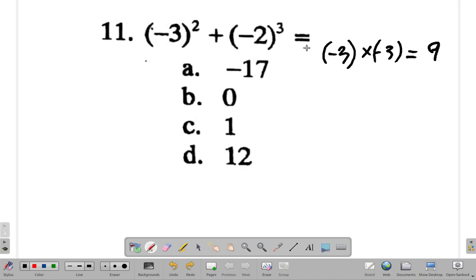It is positive 9 plus negative 2 cubed. It is negative 2 by negative 2 by negative 2. Negative by negative gives you a positive. Negative by negative, positive. Then by negative, negative. So the answer will be negative. 2 times 2 is 4. 4 times 2 is 8.